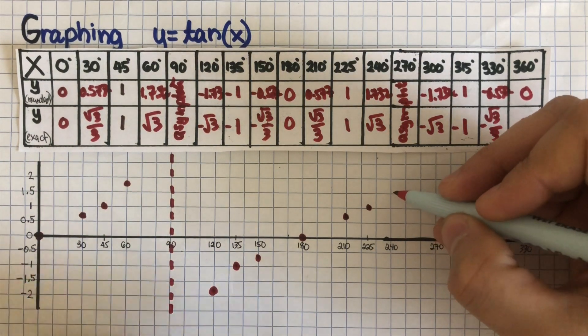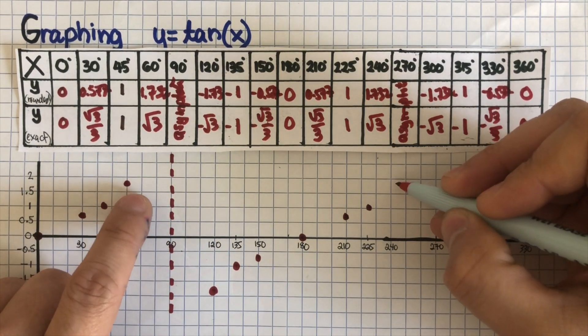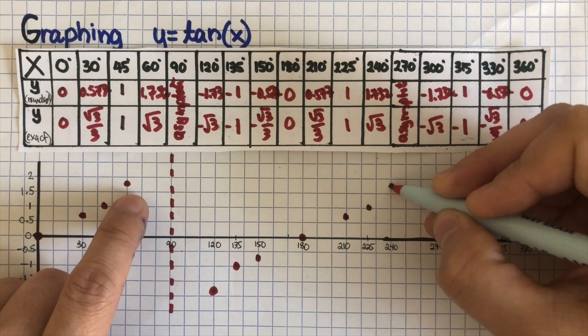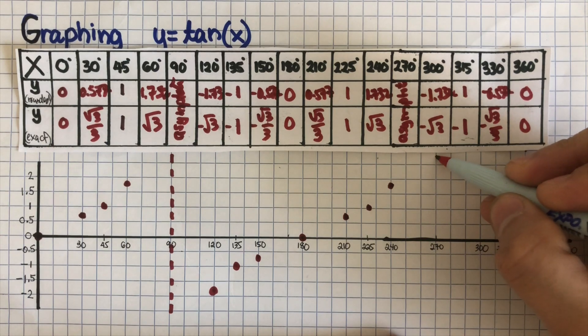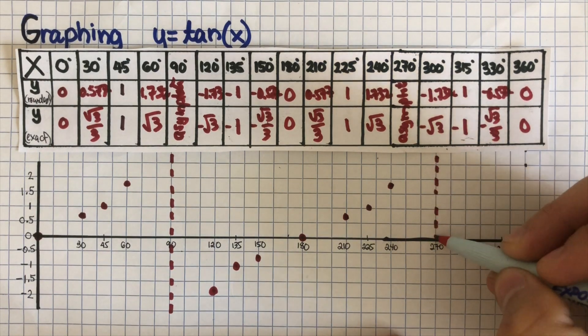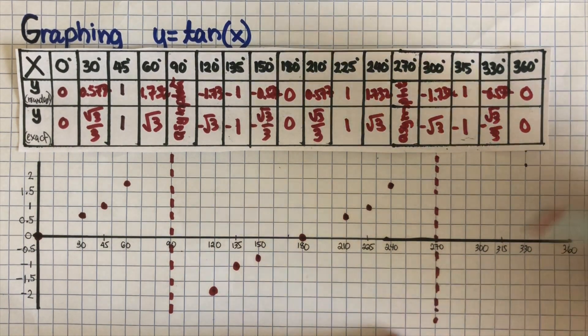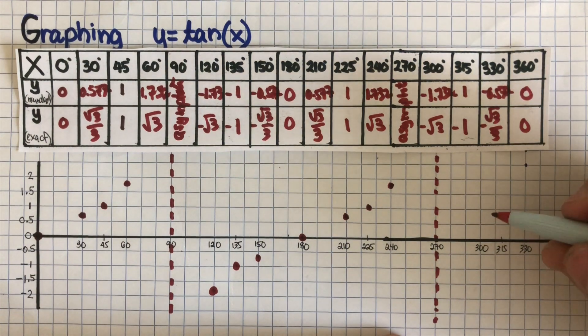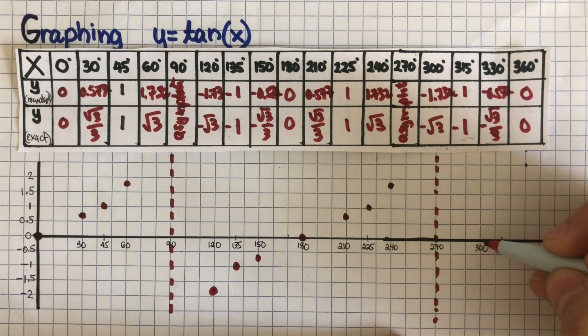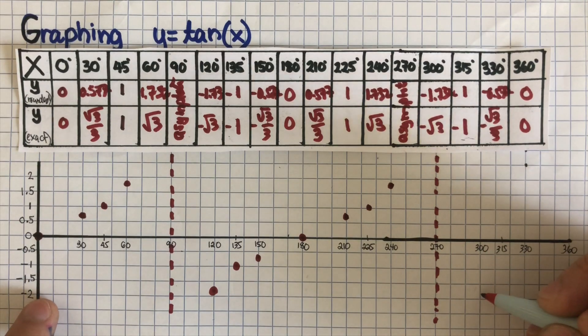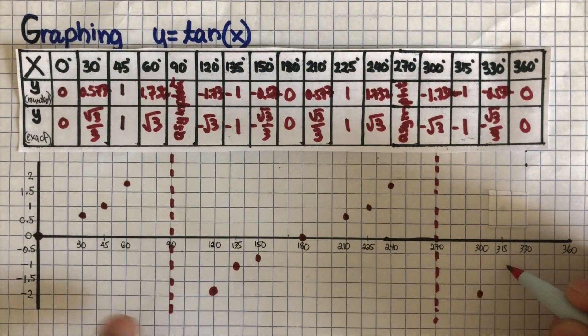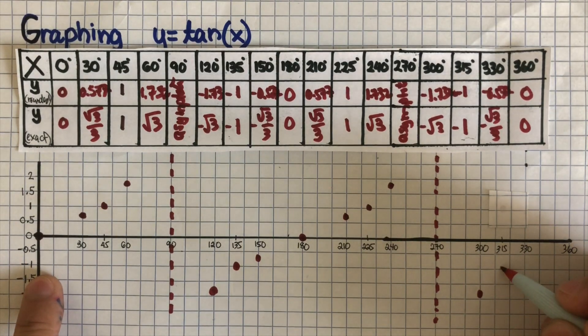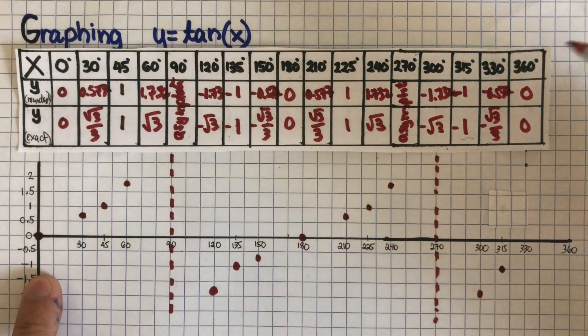And then 270 is an asymptote, so I'm going to draw a broken line over here. And then for 300 is negative 1.732, so it's down here. 315 is a negative one, so it should be here.